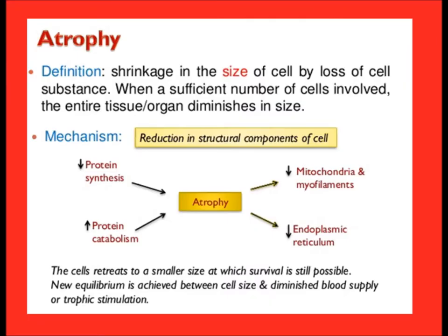Atrophy is defined as shrinkage in the size of cell by loss of cell substance. The mechanism involves decreased protein synthesis, decreased protein metabolism, decreased mitochondria and myofilaments, and decreased endoplasmic reticulum.